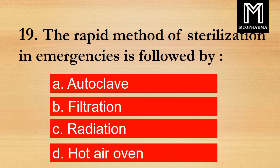Question number 19. The rapid method of sterilization in emergencies is followed by? Option A: Autoclave. B: Filtration. C: Radiation. D: Hot air oven. Correct answer: Option C, Radiation.